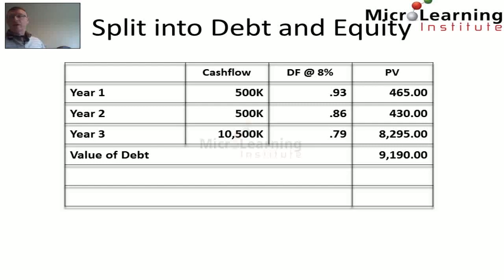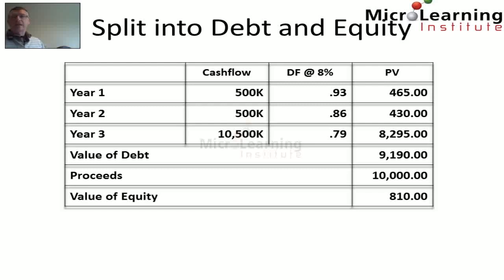The other party paid $10 million for this bond, and the additional amount — the premium over and above the present value of the bond of $9.19 million — is $810,000. This amount is deemed to be the value of the equity component at initial recognition of this convertible bond.